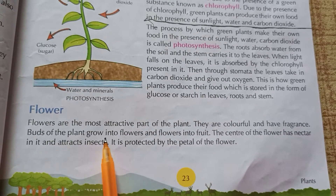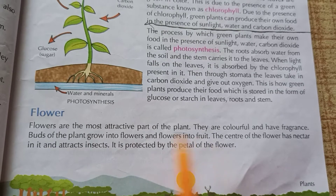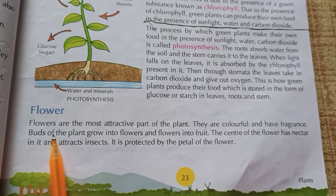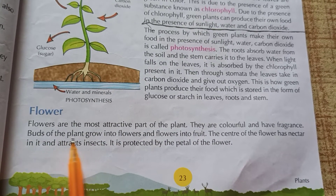Buds of the plant grow into flowers and flowers into fruit. The flower grows on the tree.